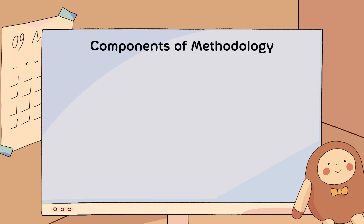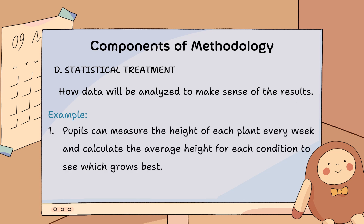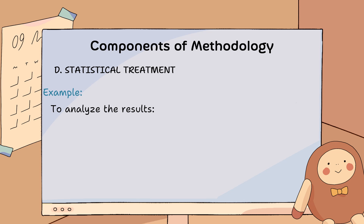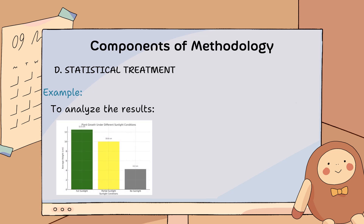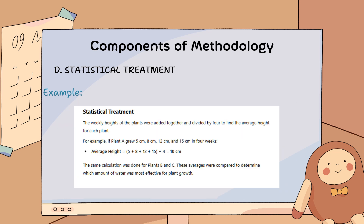Another component of methodology is statistical treatment — this is how data will be analyzed to make sense of the results. For example, pupils can measure the height of each plant every week and calculate the average height for each condition to see which grows best. To analyze the results, you can make a graph or table like in the example presented, or perform your statistical treatment as shown.